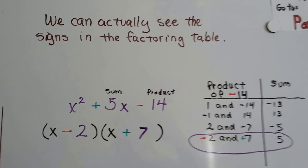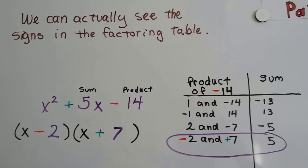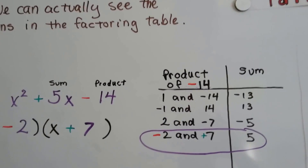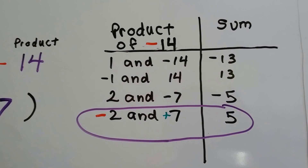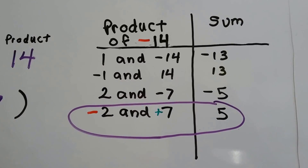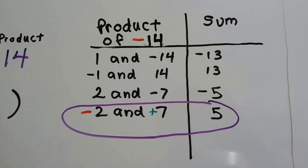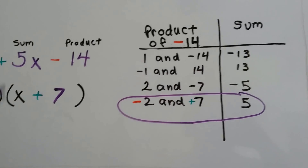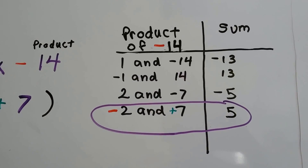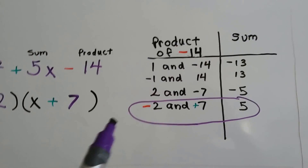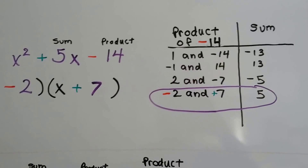We can actually see the signs in the factoring table. Look at x squared plus 5x minus 14. We start listing the products of negative 14: 1 and negative 14 — that makes a negative 13. Negative 1 and 14 makes a positive 13. When we multiply 2 and negative 7, we get negative 14, but when we add them we get negative 5 — we need positive 5. How about negative 2 and positive 7? When we add those together we get positive 5. Those are our numbers — negative 2 and positive 7. The factoring table tells us which signs to use. Piece of cake.